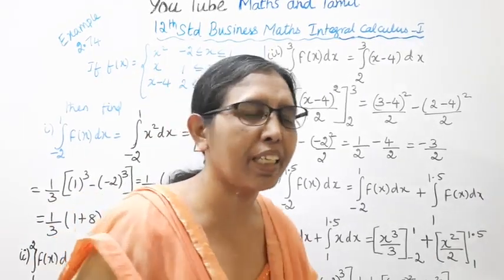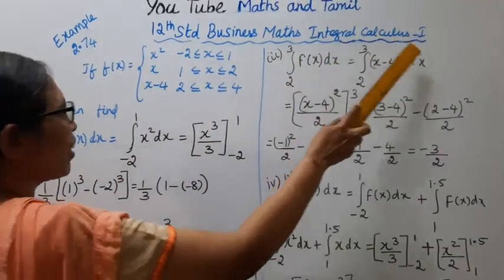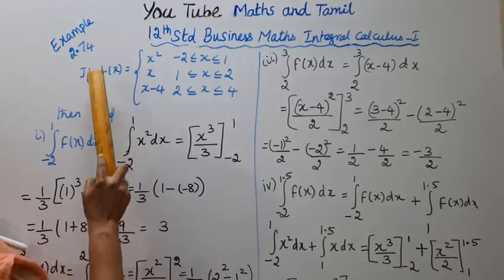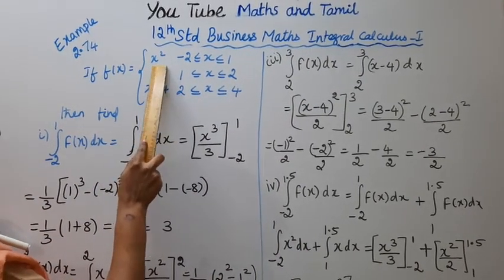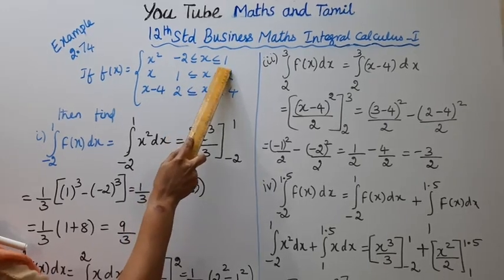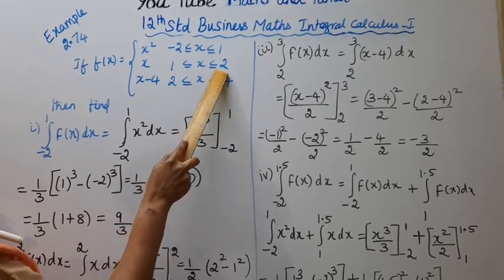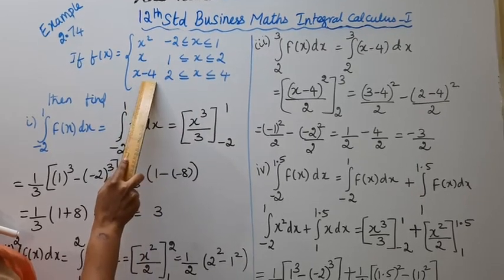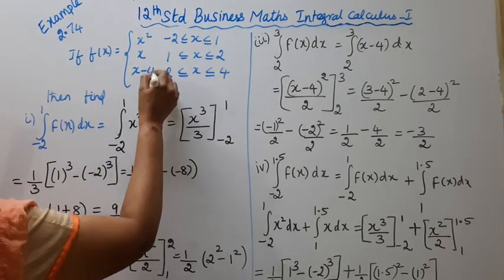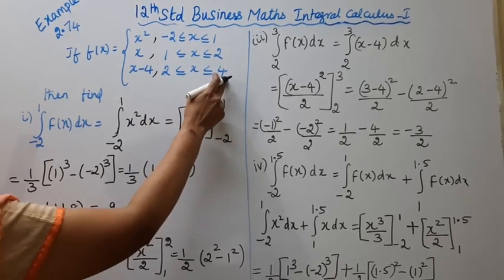Hello students, welcome to Max and Tramble channel. 12th standard business maths integral calculus 1, example 2.74. If f of x equals x squared, minus 2 less than or equal to x less than or equal to 1; x, 1 less than or equal to x less than or equal to 2; x minus 4, 2 less than or equal to x less than or equal to 4.